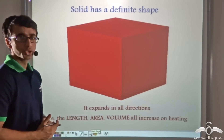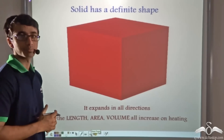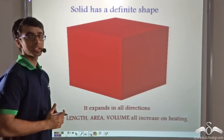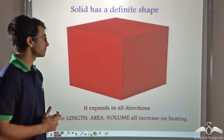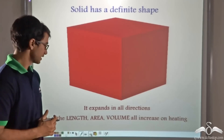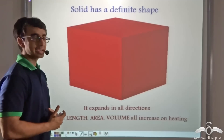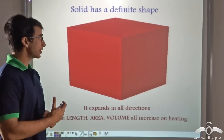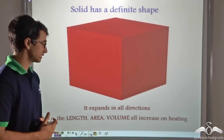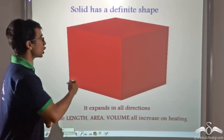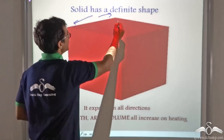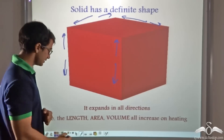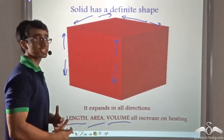Now look at this picture. Any given solid has a definite shape — your book, the glass from which you drink water, the table at which you have dinner. In this particular solid being shown, it has a fixed area, a fixed length, and also a fixed volume. So when we heat a solid, it is going to expand in every aspect — in all directions. A solid, because it has a definite shape, expands in all directions, and as a result, the length, area, and volume all three increase on heating.